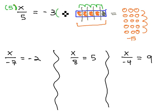If we multiply the left side by 5, we'll also multiply the right side by 5. When we do that, you'll notice the 5's divide out on the left side, leaving just the x equal to the negative 15, like we expect.